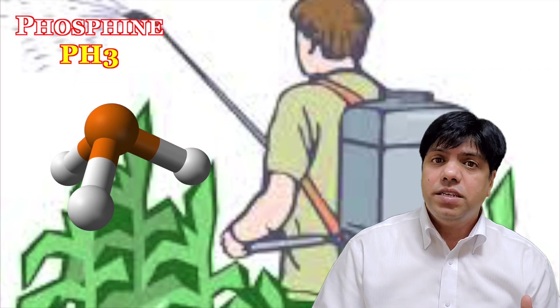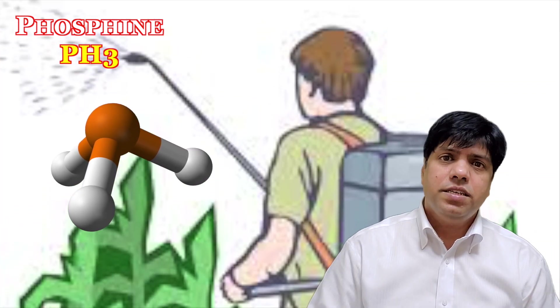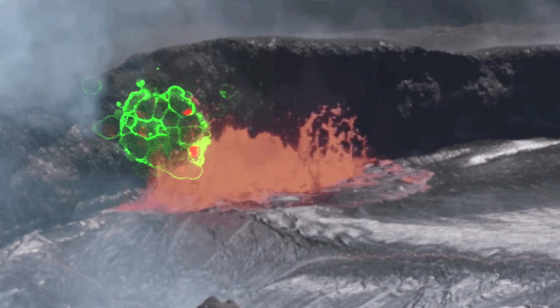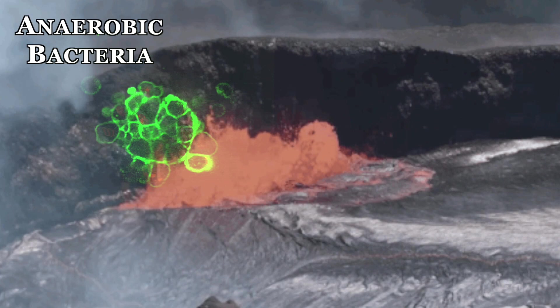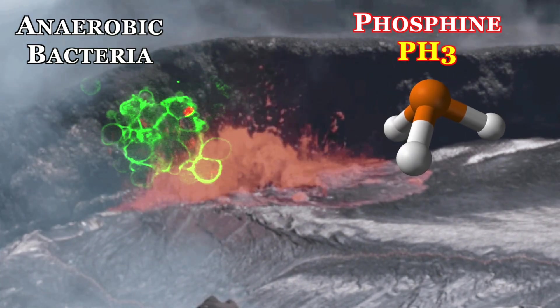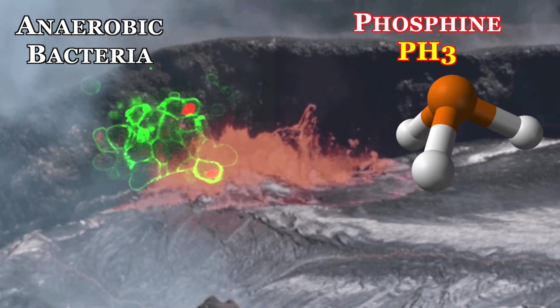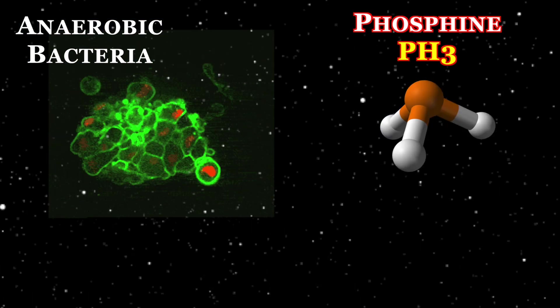It was used as a chemical weapon during the first world war, it's also used in pesticides to kill small insects. We have anaerobic bacteria in the volcanoes and marshy areas, we know wherever we have anaerobic bacteria we find phosphine but the causality has not been established.